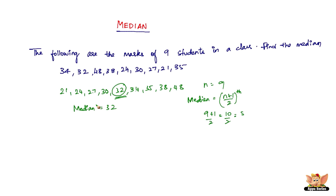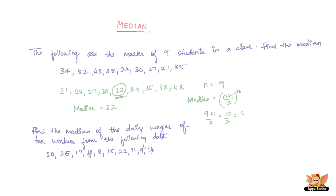Let me give you another quick example. Find the median of the daily wages of 10 workers from the following data: rupees 20, 25, 17, 18, 22, 11, 9, and 14. You've got to find the middle value of this data — what's the average wage a worker takes? You have to find it.